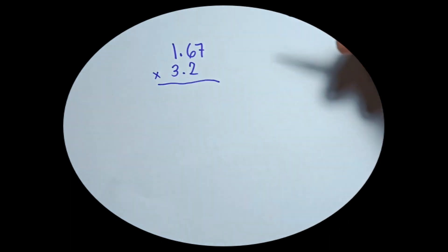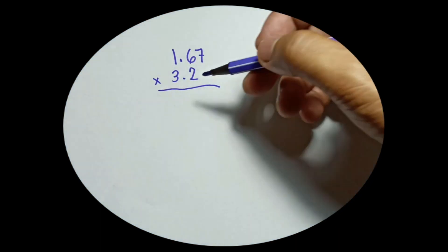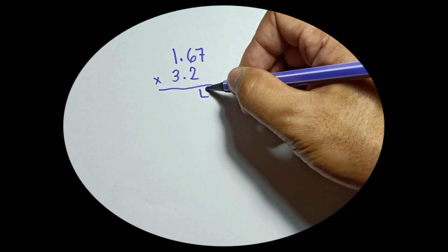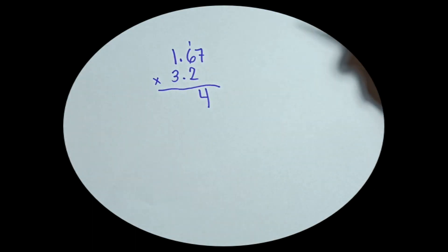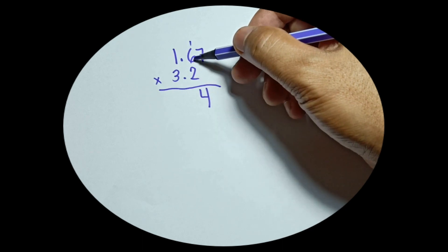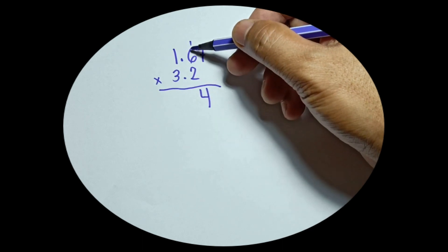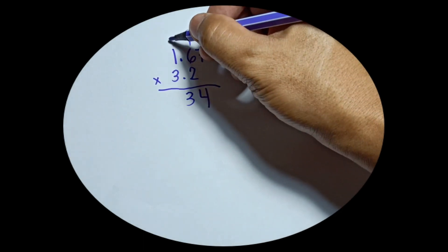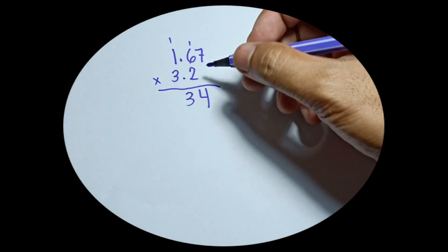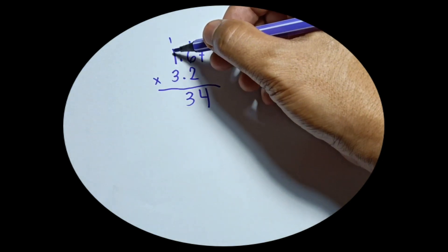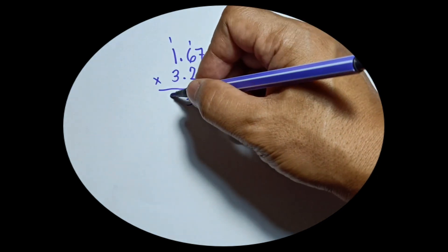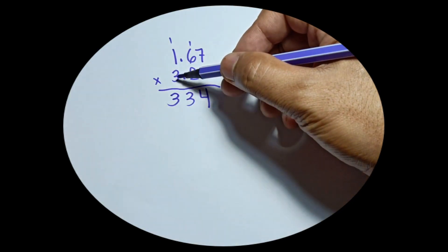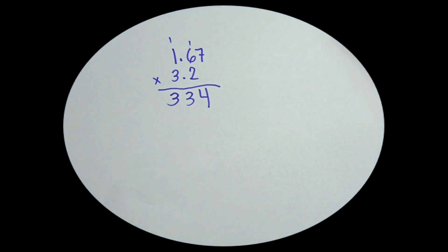Let's start with the first digit of the multiplier, which is 2. 2 times 7 is 14, carry 1 on top of 6. 2 times 6 is 12 plus 1 is 13, so write 3 and carry 1 on top of 1. 2 times 1 is 2 plus 1 is 3. Now for the second digit, let's use another color.